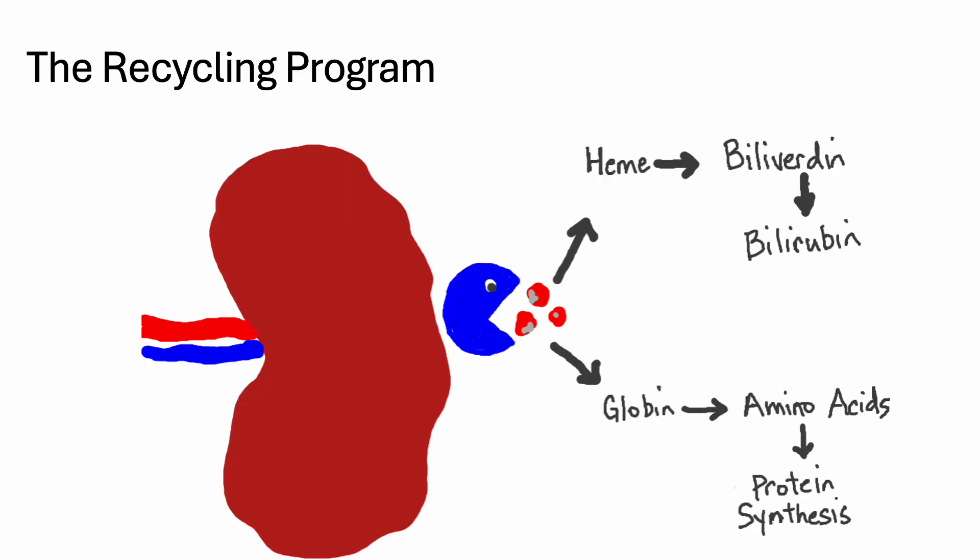Here's the recycling program. After the poor old red cells fail to squeeze through, they are gobbled up by macrophages stationed in the area. The hemoglobin within the red cells is broken down into its components, heme and globin. The heme is converted into biliverdin, which is then converted into bilirubin, which then goes into the circulation. The globin is broken down into its amino acids, which are recycled to be used in protein synthesis within the body.